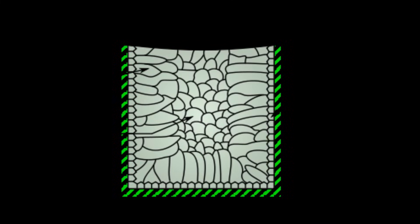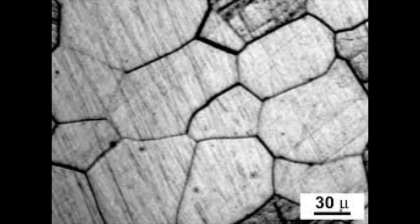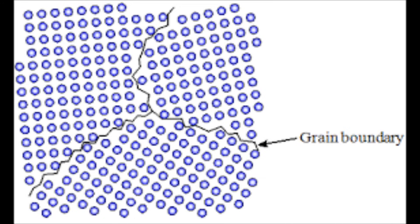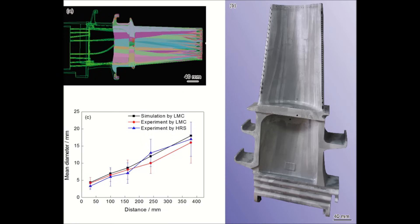Equiaxed castings are crystals that have axes of approximately the same length without any order. This type of casting creates grain boundaries, or defects in the material, and can form failure points. Due to these failures, turbine blades began being manufactured with DS.